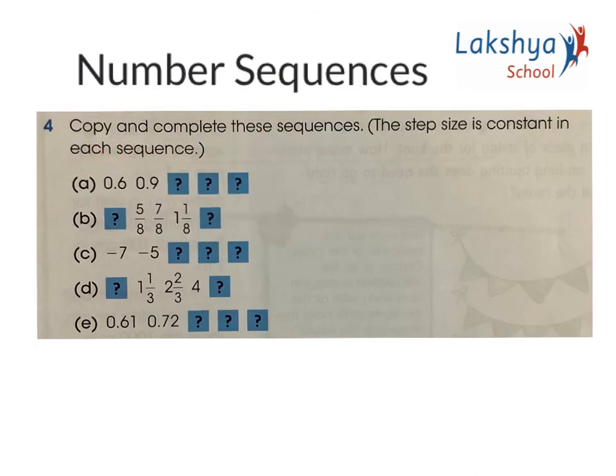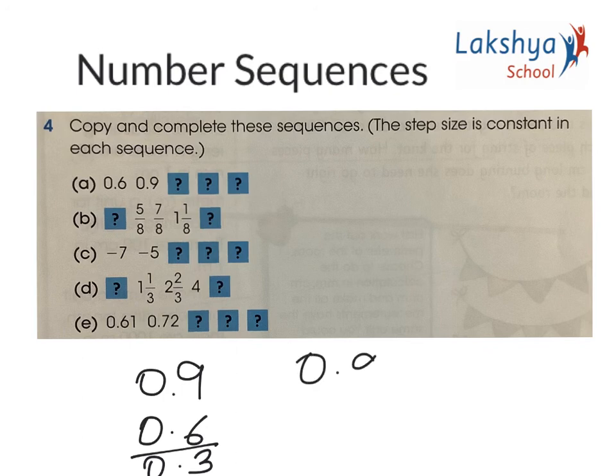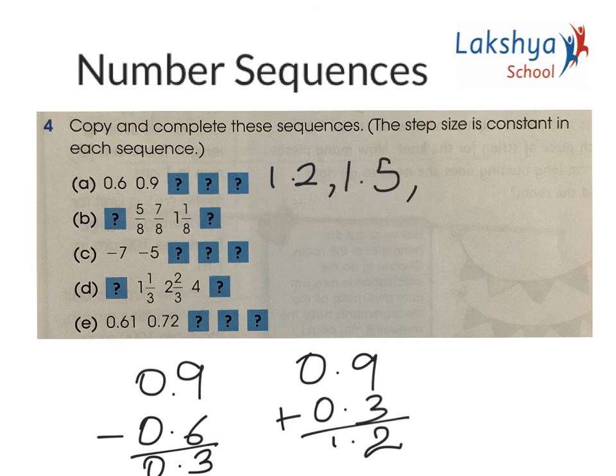Question 4: Copy and complete the sequence. The step size is constant in each sequence. Remember that constant means it remains the same throughout. Let's look at the first one. 0.6 has jumped to 0.9. Can you find the difference? It is 0.9 minus 0.6 giving 0.3. So each time you are jumping by 0.3. The next number after 0.9 is 1.2, then 1.5, then 1.8. This is the first sequence.